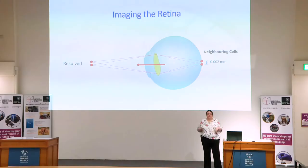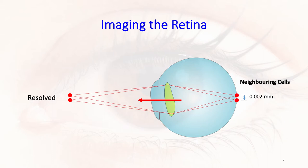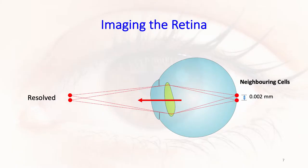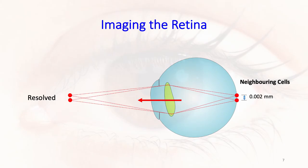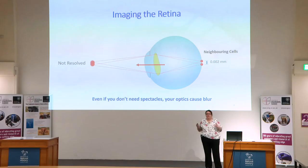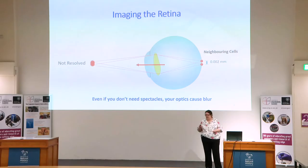So why can't we do single-cell resolution? Imagine two cells at the back of the eye separated by thousandths of a millimetre — the cells are really tiny. When light passes through your lens and cornea, because they're not a perfect shape and are optically quite poor, you can't resolve these two cells. If you could resolve them, you'd see them separate, but what you actually see in practice is that, because of the blur in the eye, they overlap. And this happens even if you don't wear spectacle or contact lenses — even with perfect vision, the optical system of the eye is really poor. You really can't do this in a living eye with conventional technology.